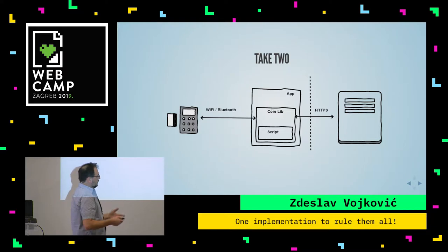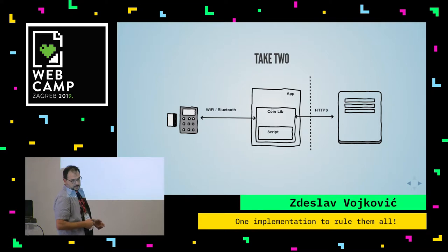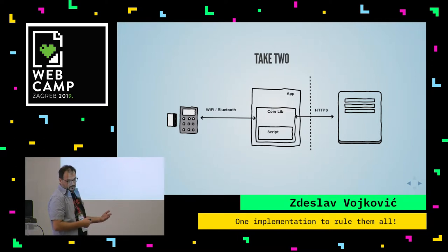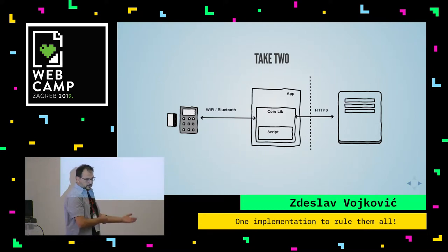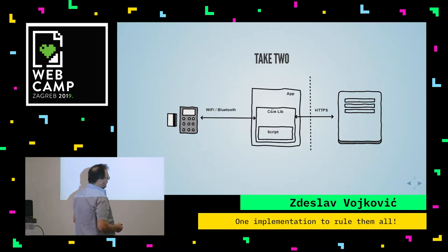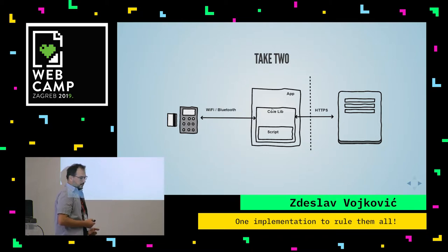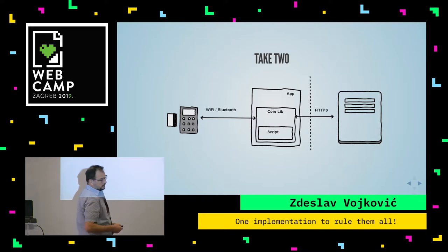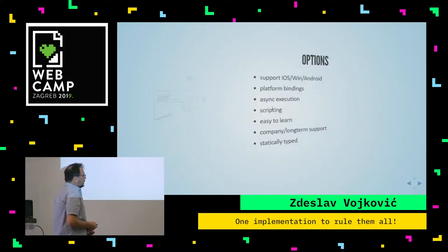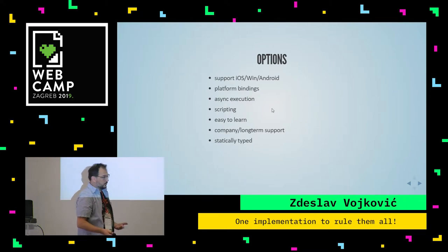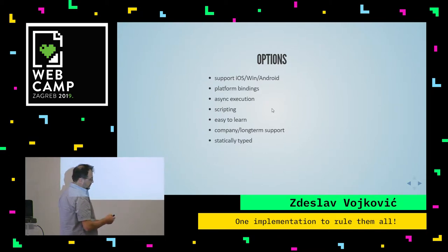There would be a core library implementing generic logic across all platforms — you implement it once and fix bugs in one place. However, we didn't want to encode all the logic in the core library, because we wanted the flexibility of changing transaction procedures very quickly. If we see issues, we want to fix them in minutes, not wait three days until the application is updated. So we decided to embed scripts which run the transactions, pulled directly from the server.